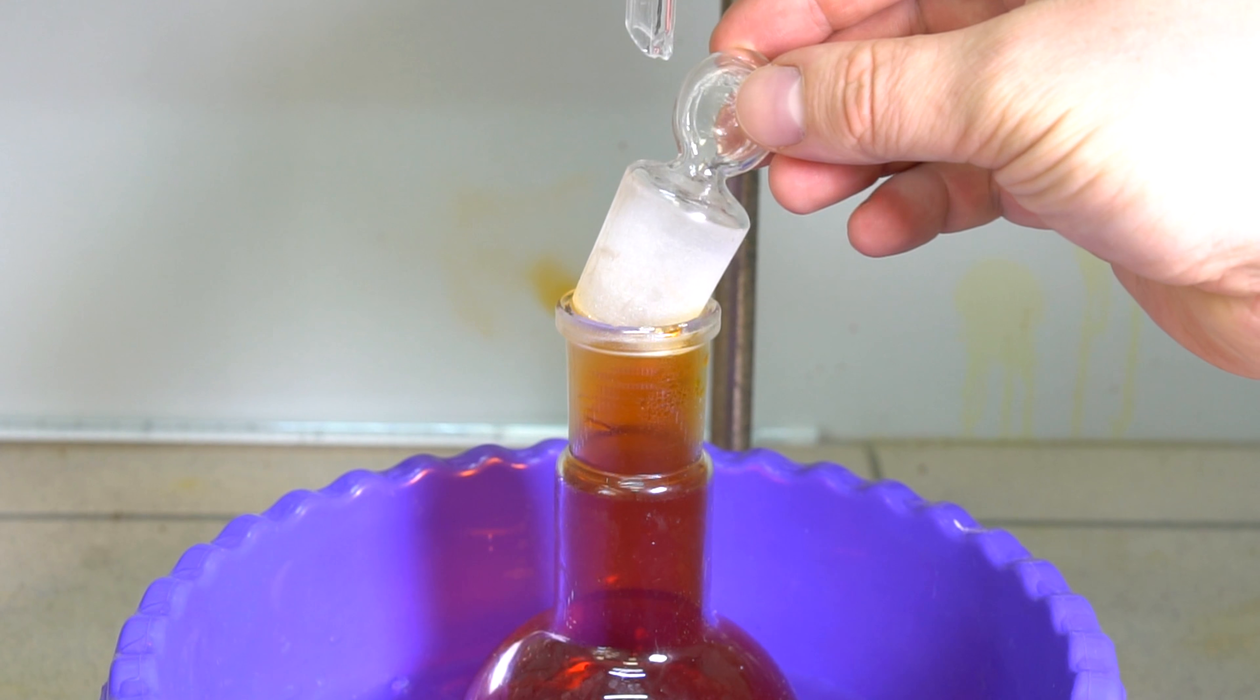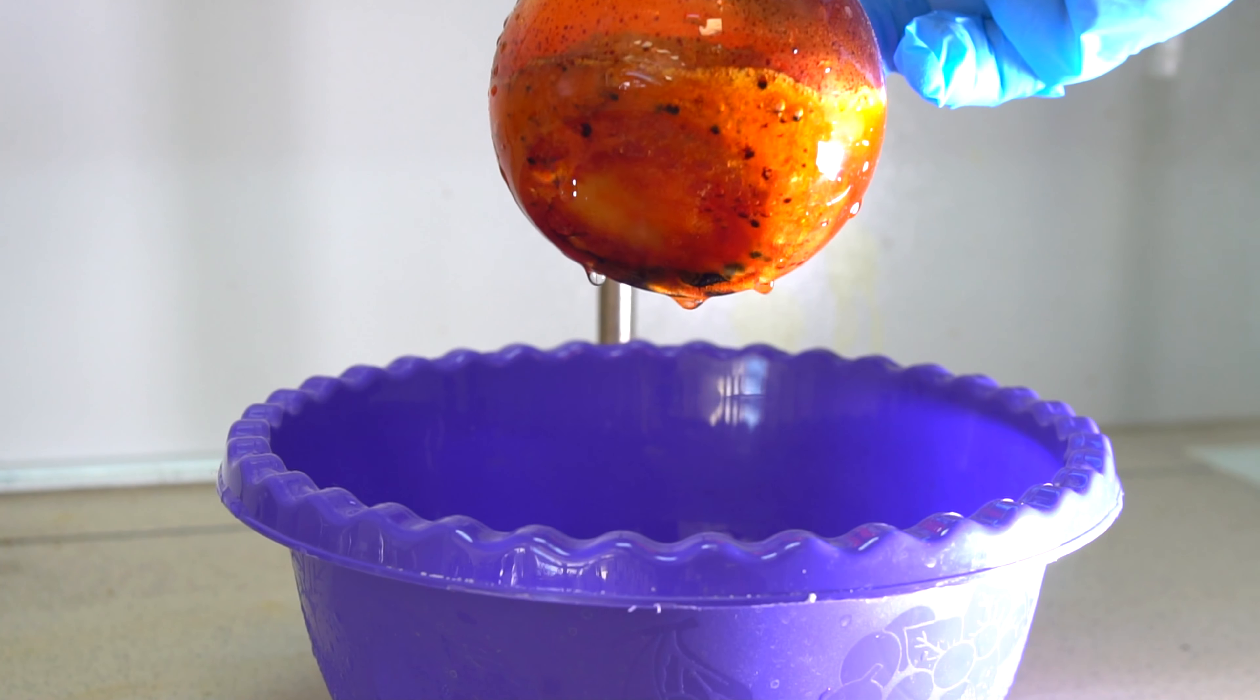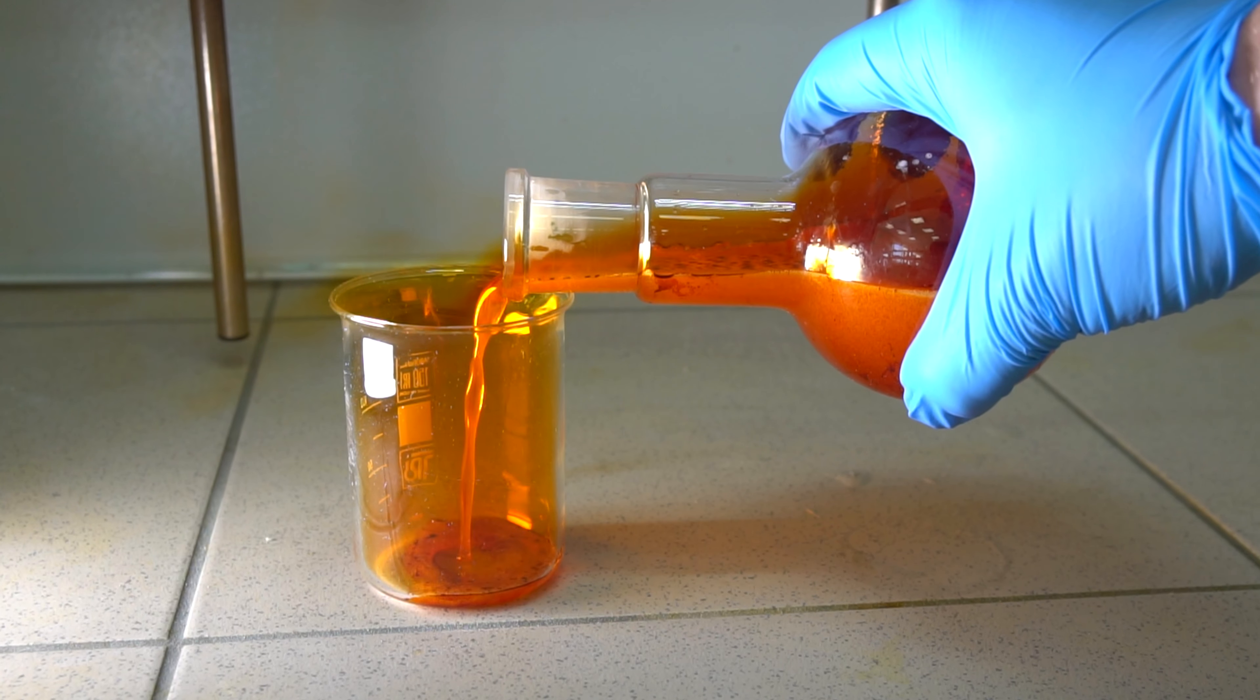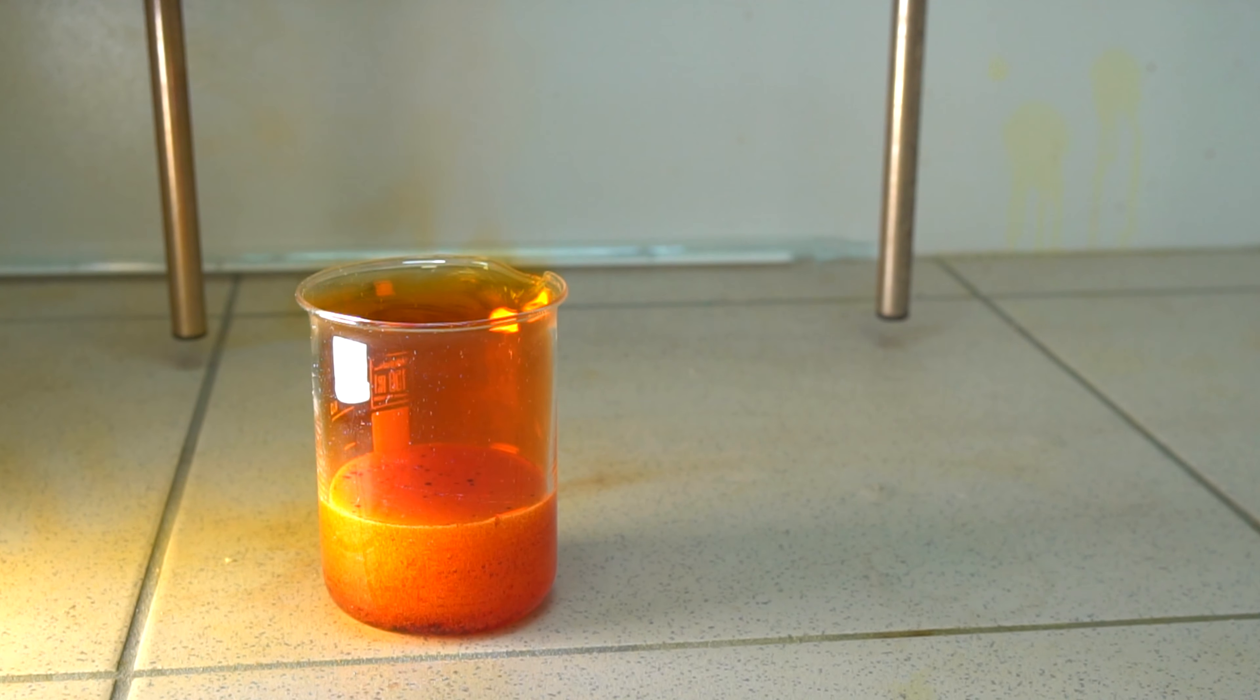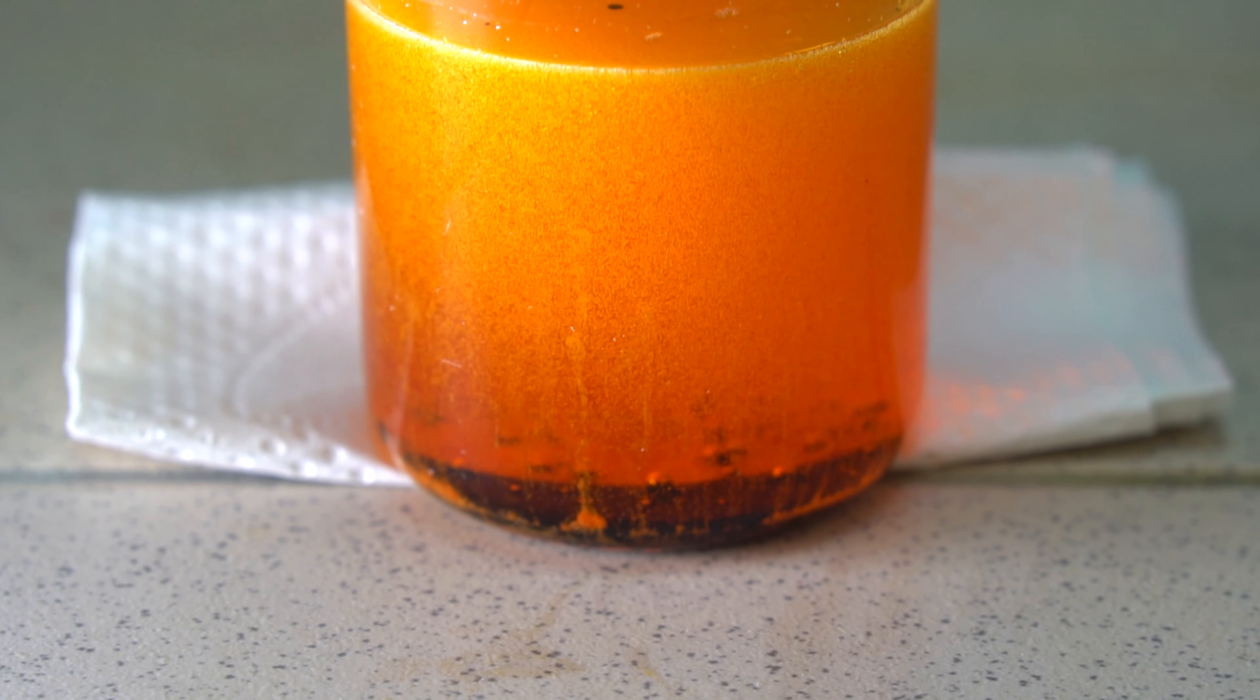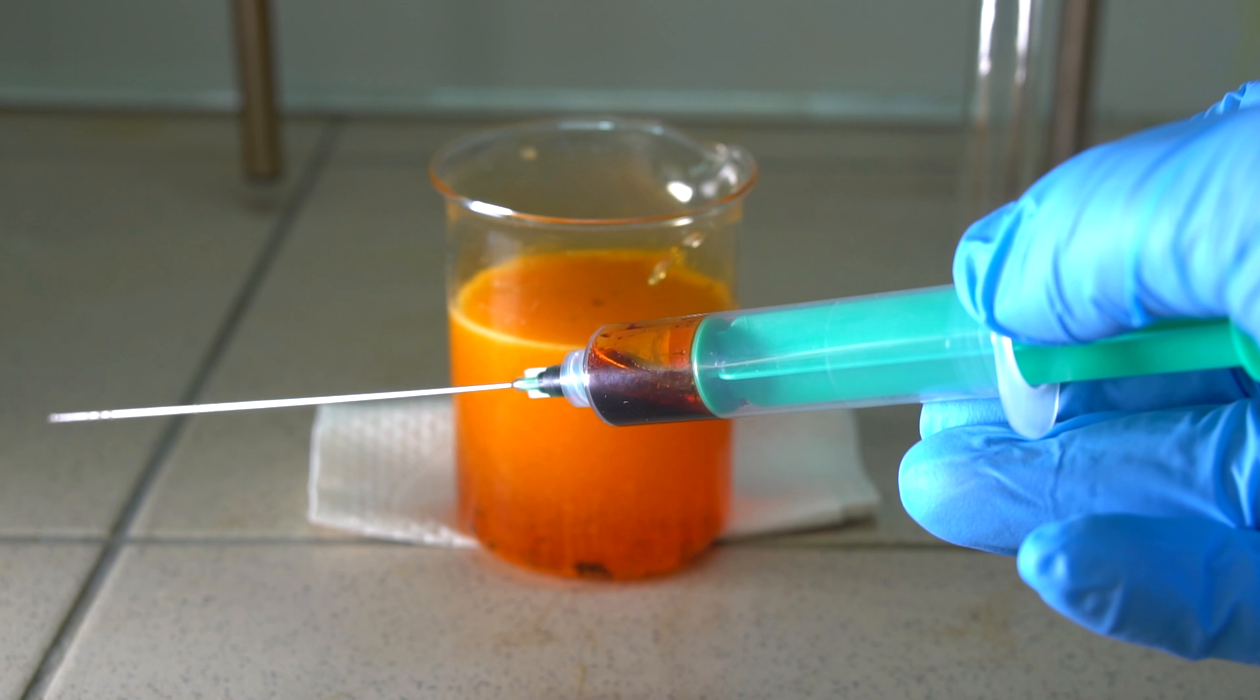After that, I let the mixture cool down more. Since bromine's density is three times the density of water, it sank to the bottom. Now we just need to separate it. The mixture still contained leftover hydrogen peroxide, which is why it foamed, releasing toxic bromine vapors. Under normal conditions, bromine is a liquid, so it was very easy to separate it from the leftover reaction mixture with the help of a syringe.